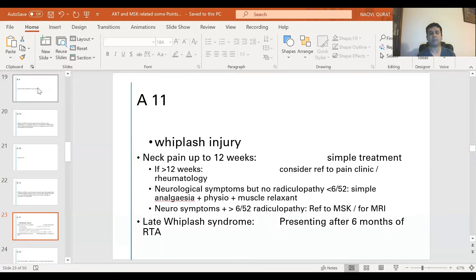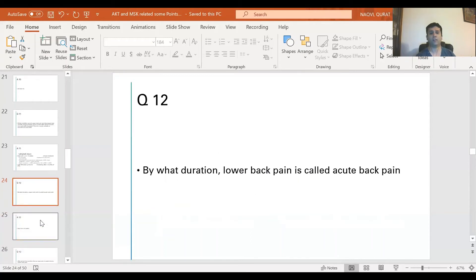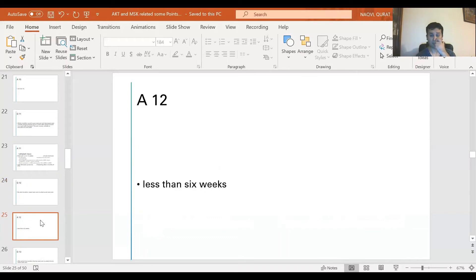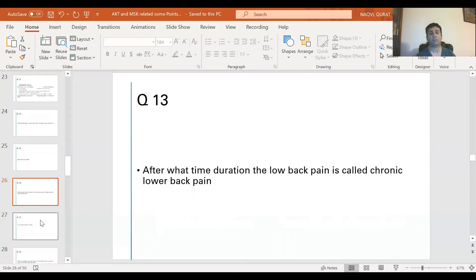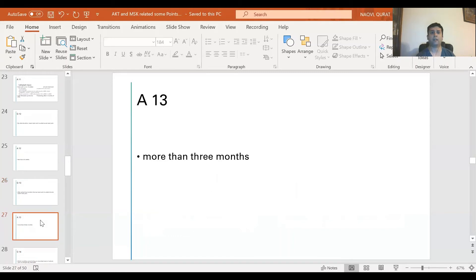Question 12: By what duration is lower back pain called acute back pain? The answer is less than 6 weeks, that is one and a half months. Question 13: After what time duration is low back pain called chronic lower back pain? The answer is more than 3 months. Unfortunately there isn't any classification between one and a half to 3 months.